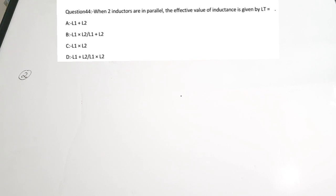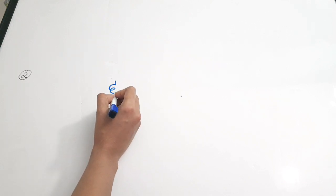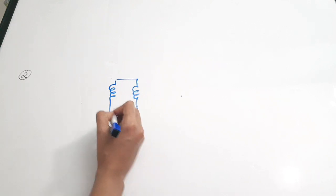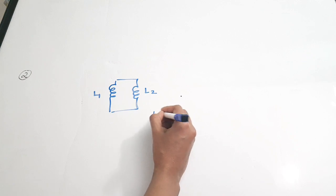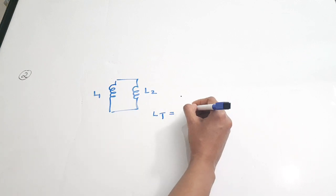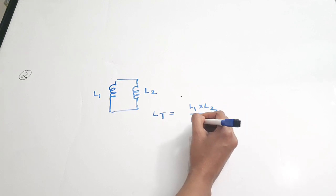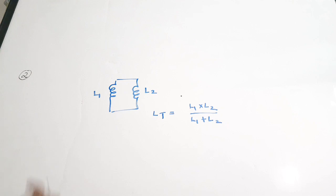The second question is asking regarding the connection of two inductors in parallel. A lot of people have doubt regarding combinations of resistors, inductors, and capacitors, so let us simplify that. When two inductors L1 and L2 are connected in parallel, the equivalent or effective inductance LT is given by L1 times L2 divided by L1 plus L2.